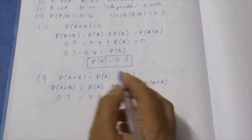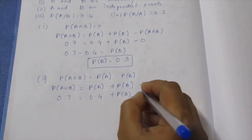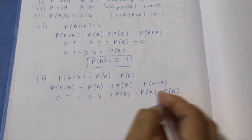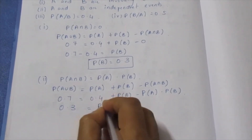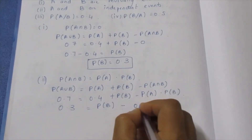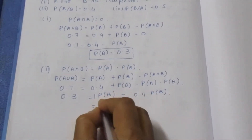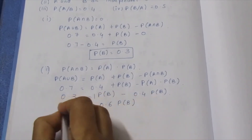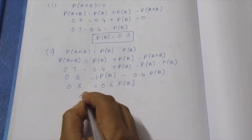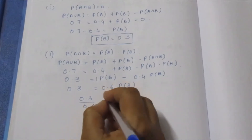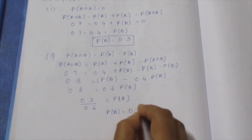Since P(A∩B) = P(A)·P(B) = 0.4·P(B), substituting into the union formula: 0.7 = 0.4 + P(B) − 0.4·P(B), which gives 0.3 = P(B) − 0.4·P(B) = 0.6·P(B). Dividing both sides: P(B) = 0.3 ÷ 0.6.